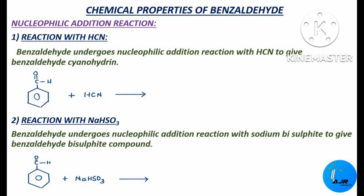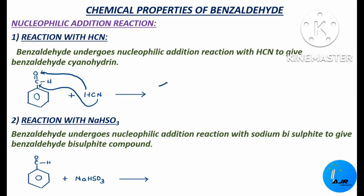This is benzaldehyde CHO and this is hydrogen cyanide. During this reaction, this H gets added up to this O and this CN gets added up to this carbon. So we get benzaldehyde cyanohydrin first.